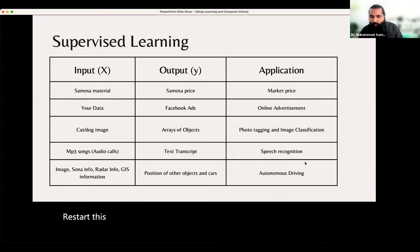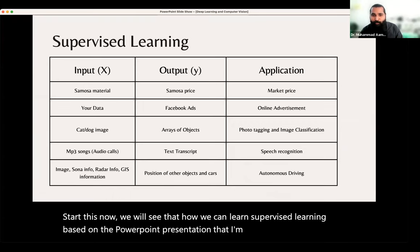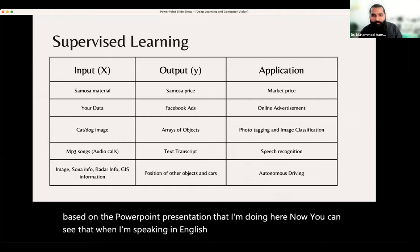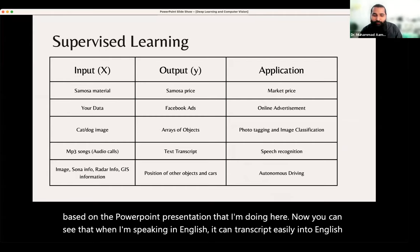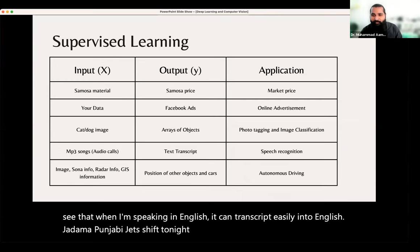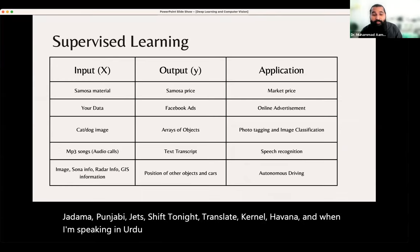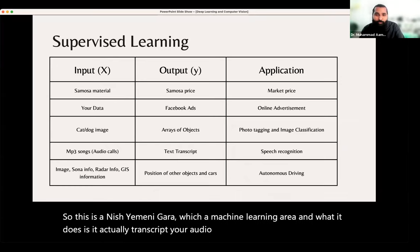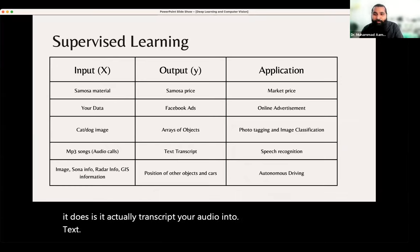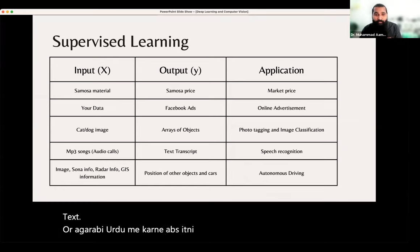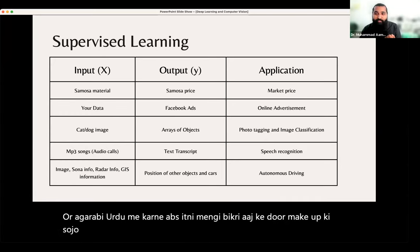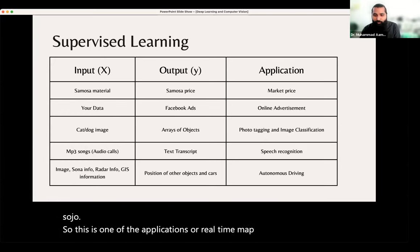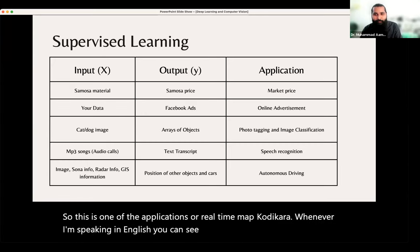Let's start this. Now we will see how we can learn supervised learning based on the PowerPoint presentation. When I am speaking in English, it transcripts easily into English. When speaking in Urdu or Punjabi it can translate differently. This is machine learning working in the background — it transcripts your audio into text. This is a real-time application I am showing you right now.